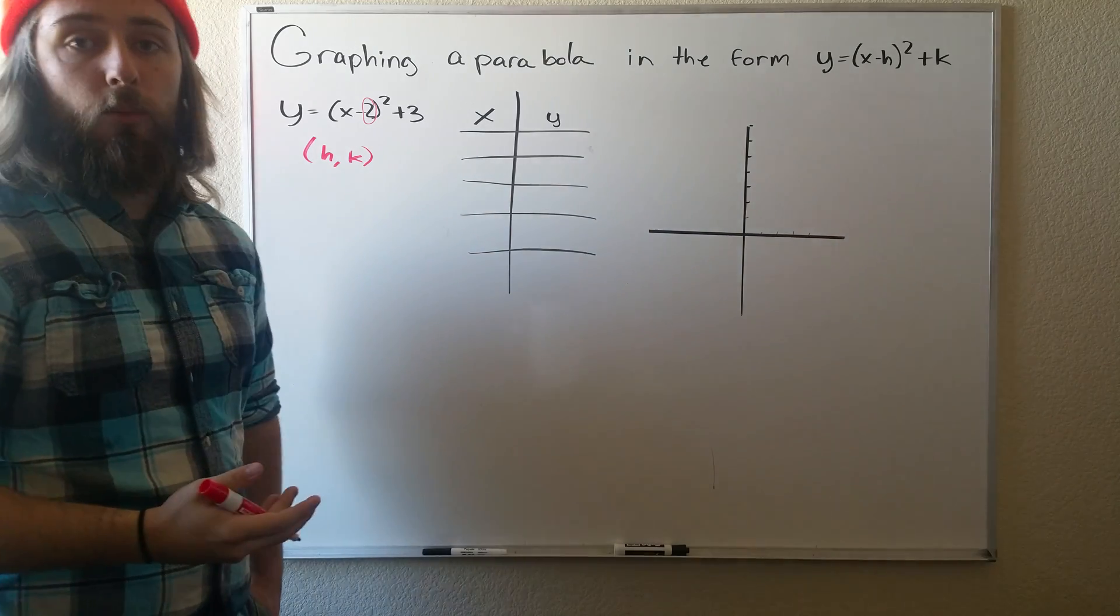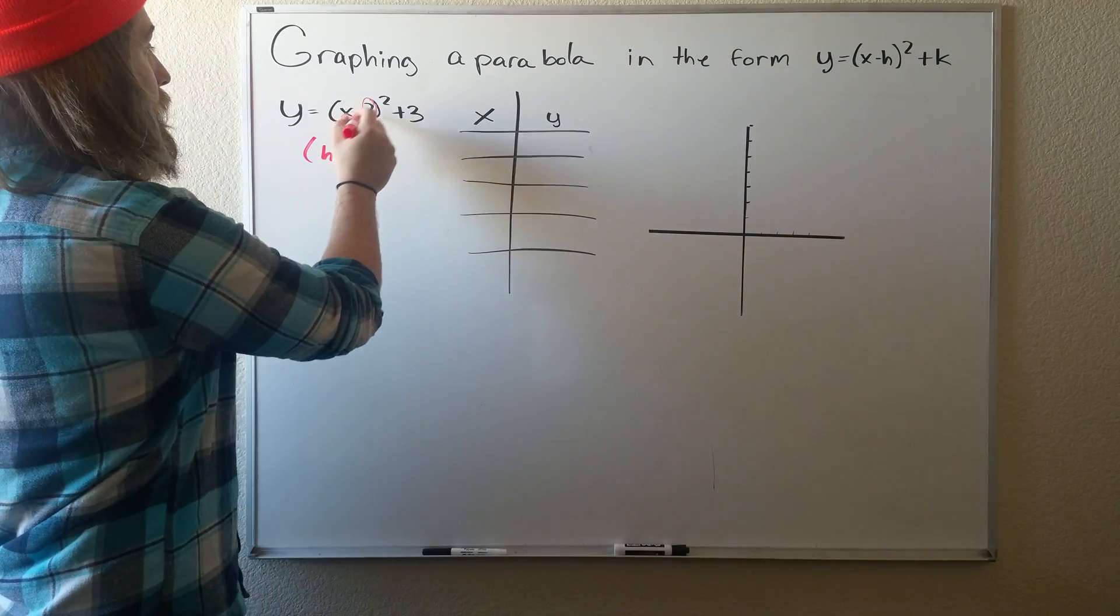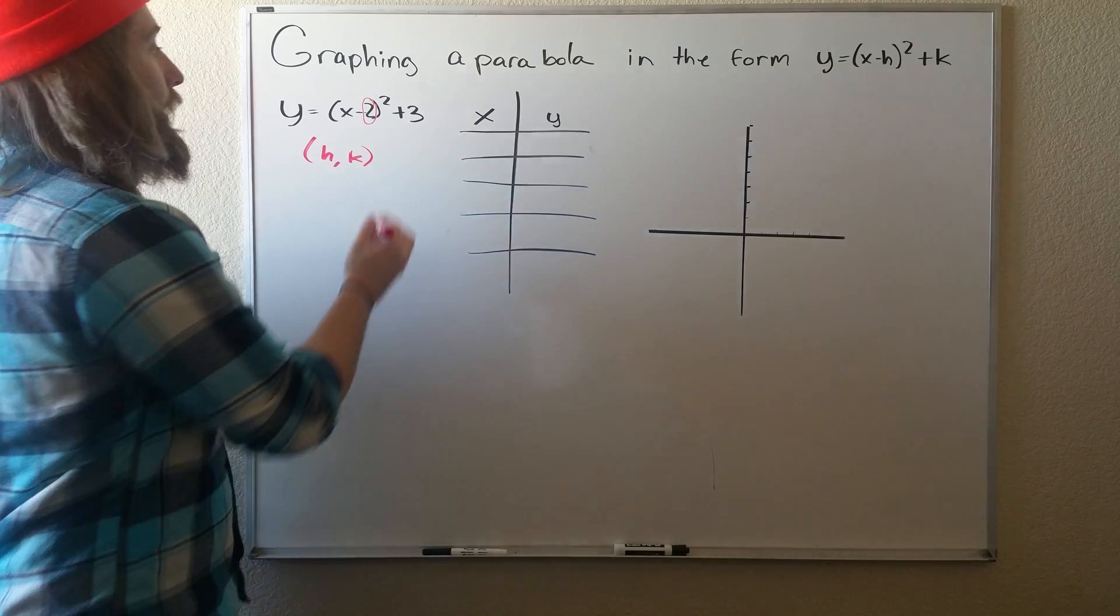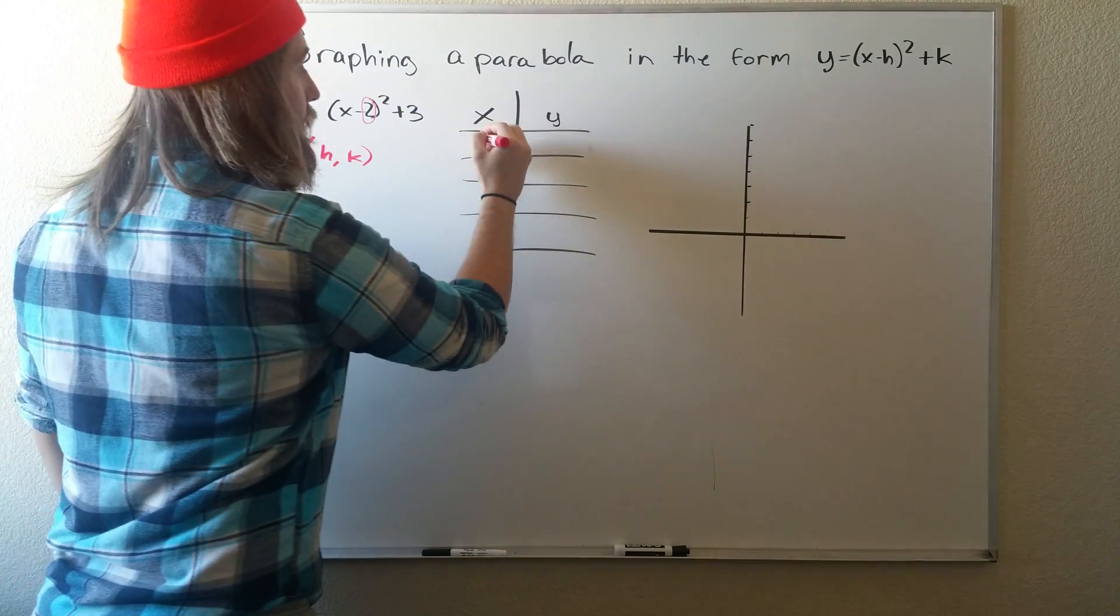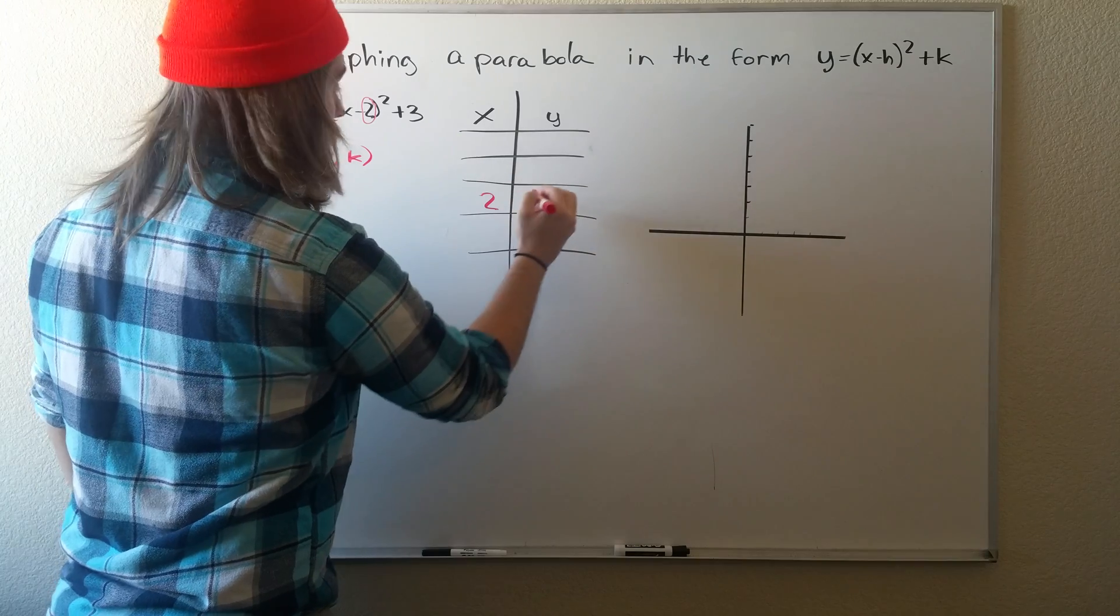we know h is just 2. Don't include the minus. If you want to think about it another way, it's always the opposite of this number. And then k is just 3. So we have 2 and then 3.